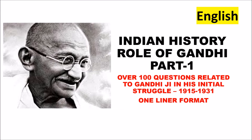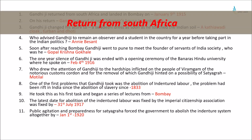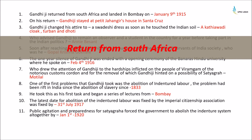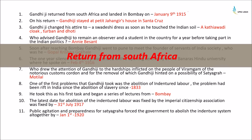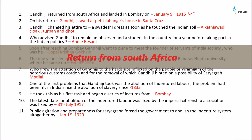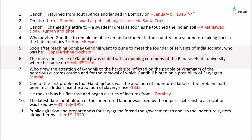Gandhiji returned from South Africa and landed in Bombay on January 9th, 1915. He had been working as a lawyer in South Africa and was fighting for the rights of South African Indians. On his return, Gandhiji stayed at Patith Jahangir's house in Santa Cruz.